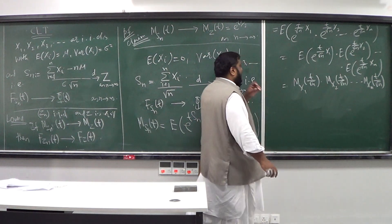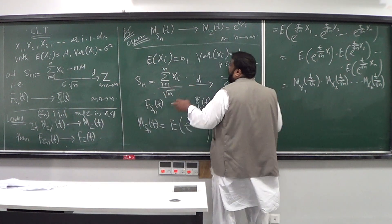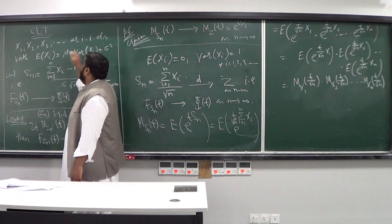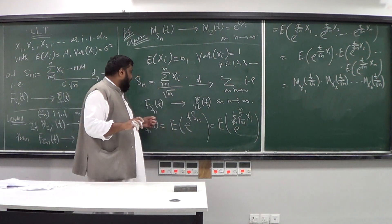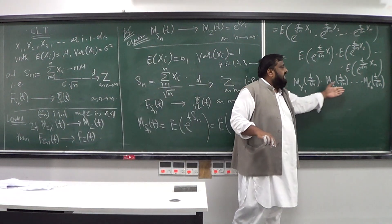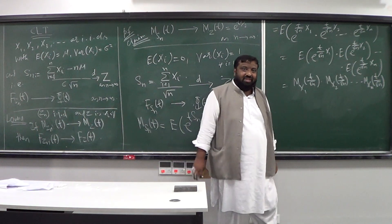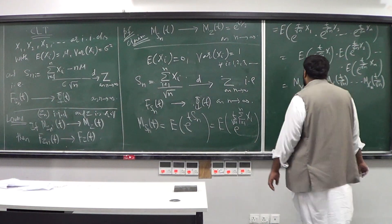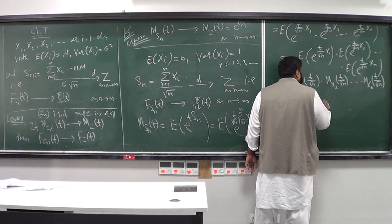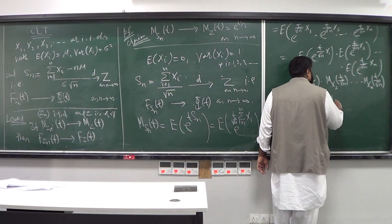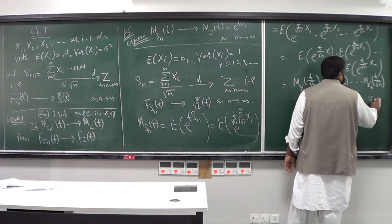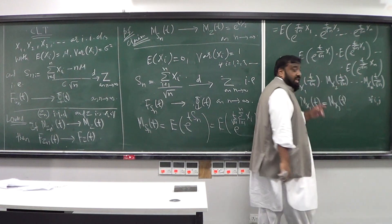Since all these random variables are identically distributed with the same mean and variance — in the first case, mean 0 and variance 1 — their moment generating functions are all equal. In other words, M_{X_i}(t) = M_{X_j}(t) for all i and j. Let us call this common moment generating function M(t).